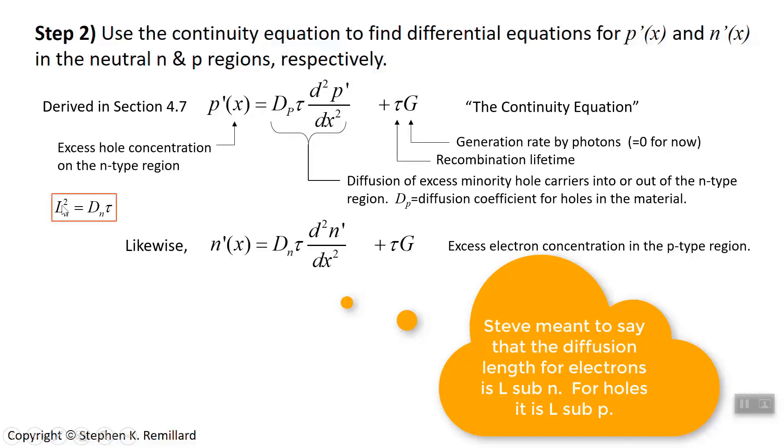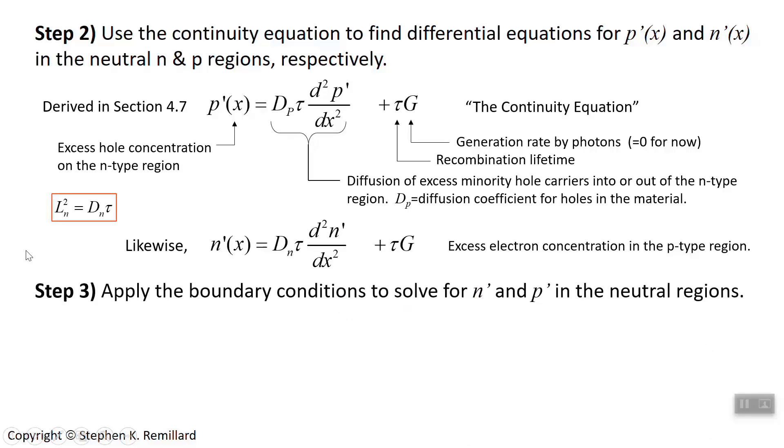where you would also swap out a subscript p for the diffusion coefficient. In fact, we're going to do that in step 3, which is to apply those boundary conditions from step 1, and solve for n prime and p prime in the neutral regions. And again, the neutral regions means beyond the depletion region, outside of the depletion region.